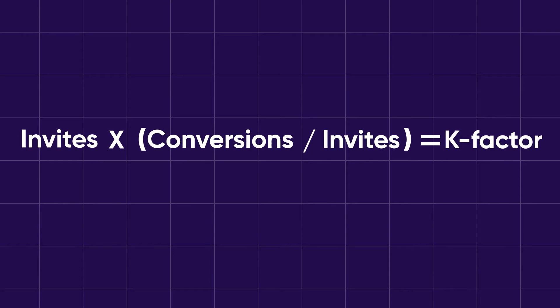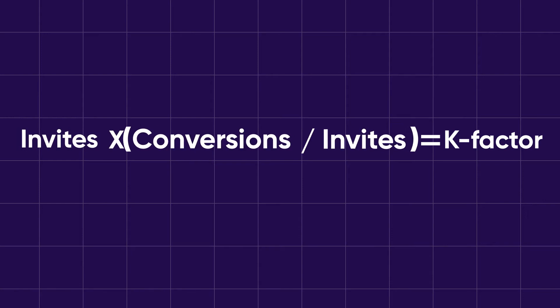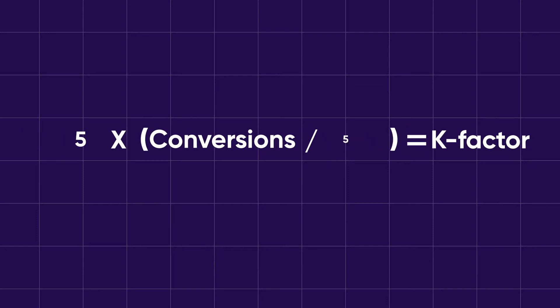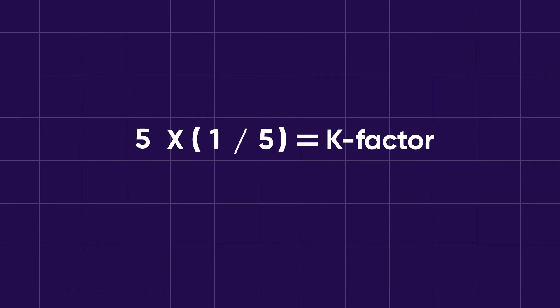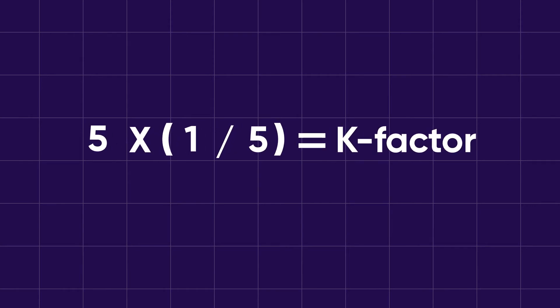But how do you know if you're doing it right? Well, like everything in marketing, it can be measured. The basic way to calculate your K-Factor is by taking the total number of invites each of your current customers send, and multiplying it by the conversion for those invites. So let's say that the average person in your app invites five people, and of those invites, one of those five convert. So that would be five times 0.2, giving you a K-Factor of one. And anything higher than one, even by a fraction, is considered good.